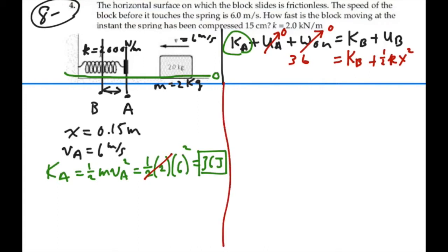Let's continue this. We know that the, well, then we have the kinetic energy at B is equal to 36 minus one-half kx squared. That's going to be 36 minus one-half times 2,000 times 0.15 squared. Let's figure out what that is.